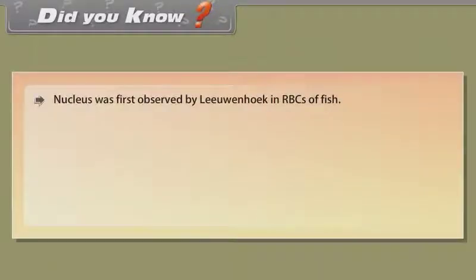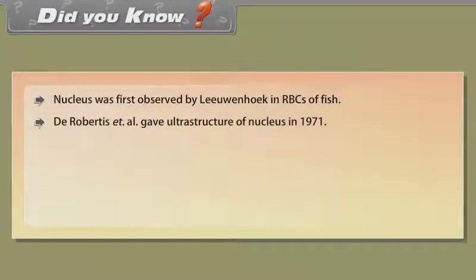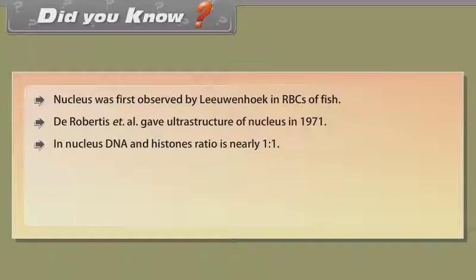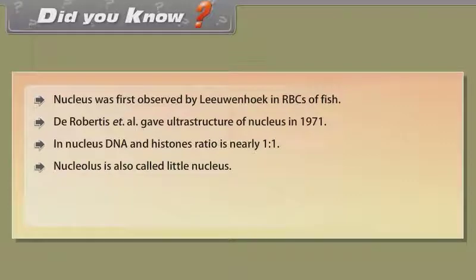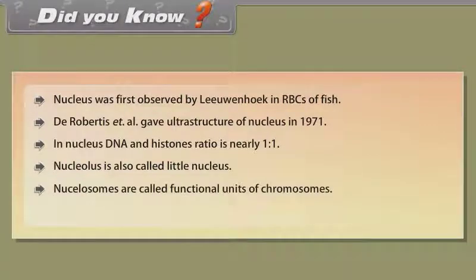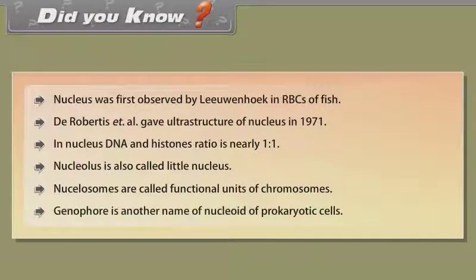Did you know? Nucleus was first observed by Leeuwenhoek in RBCs of fish. D. Robertis et al. gave the ultrastructure of nucleus in 1971. In the nucleus, the DNA and histones ratio is nearly one to one. Nucleolus is also called the 'little nucleus'. Nucleosomes are called the functional units of chromosomes. Genophore is another name for the nucleoid of prokaryotic cells.